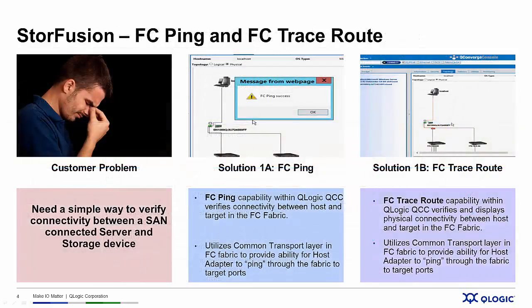Let's start by looking at the customer problem. The SAN administrator gets a call that an application doesn't seem to be running like normal. And of course, he's getting the blame. It couldn't be the server, and it couldn't be the application. It's always storage. Well, where does he start to verify if there's a problem or not?